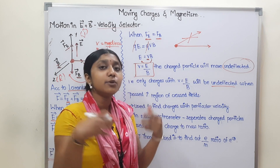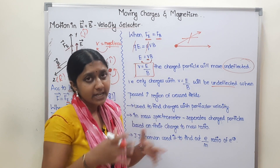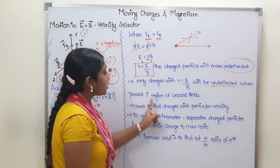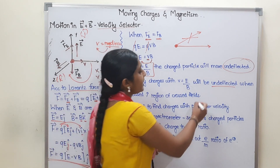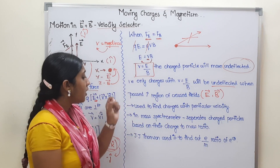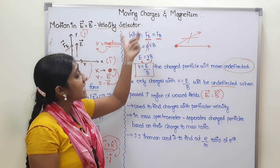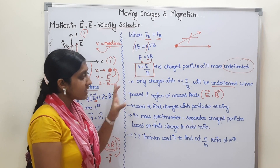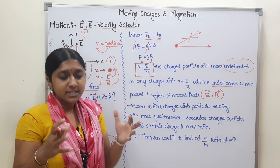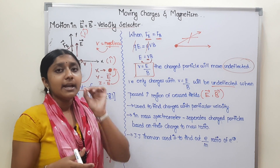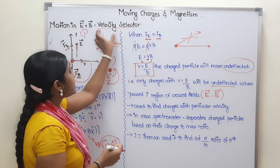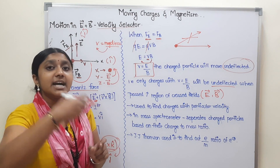If the velocity is not equal to E by B, the particle is deflected — a net force acts on it when it passes through crossed electric and magnetic fields.